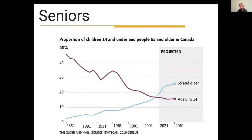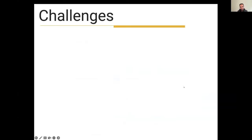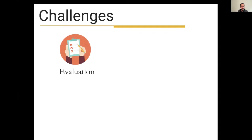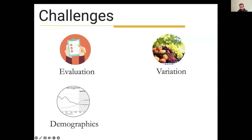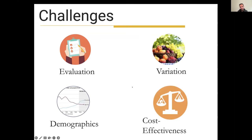In Canada, like many other countries, the proportion of seniors is rapidly increasing. I think it was around 2016 that the number of Canadians over the age of 65 outnumbered those under the age of 15. So that presented a lot of challenges for the health authority that I was working with in my PhD. They expressed challenges around evaluation of their home health services, a lot of variation in the services they were providing, and this burning platform in terms of demographics and increased pressures, as well as questions around cost-effectiveness.